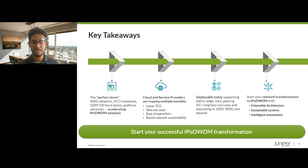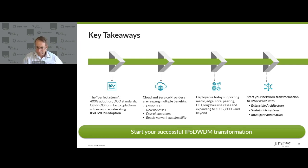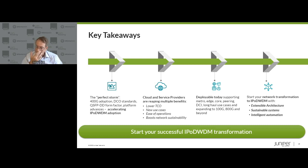Thank you, Moog and Moran. We have about nine minutes for Q&A. First question for Moran: how is optical traffic grooming established in IP over DWDM, and are there trade-offs versus a traditional network architecture — particularly for a backbone or regional long-haul type network?